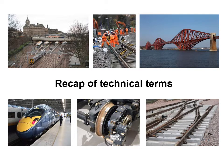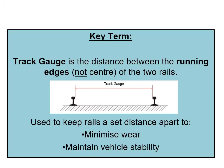Before we start, we'll just do a quick recap of some of the technical terms that we learned in the previous unit, that we're going to continue and build upon in this unit. The first term is Track Gauge, and this is the distance between the running edges, not the centre of the two rails.